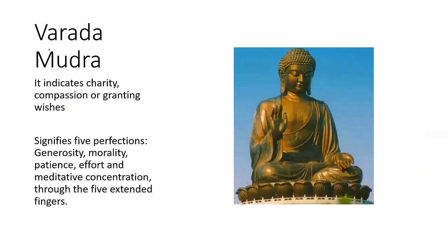The next is Varada Mudra, which is similar to Abha Mudra but with little changes. In Varada Mudra, the right hand is in an Ashirvad posture, but the five fingers of the right hand are little bit bent — even the thumb is bent. In Abha Mudra the fingers are not bent, but in Varada Mudra the fingers are bent. That is the difference between Varada Mudra and Abha Mudra.